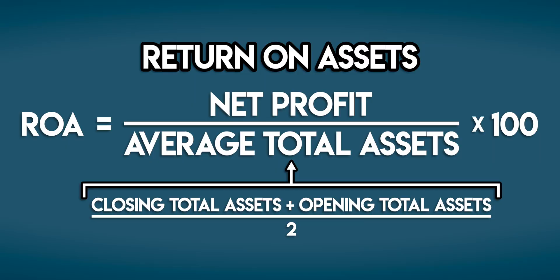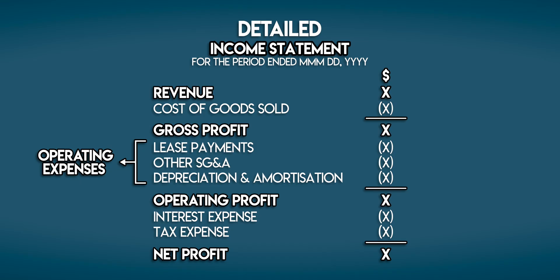Where can we find net profit and total assets? Net profit belongs in the income statement — the financial statement that summarizes a business's revenues and expenses over a period of time. Net profit is on the bottom line; it's the net financial gain left in the business after deducting all expenses.